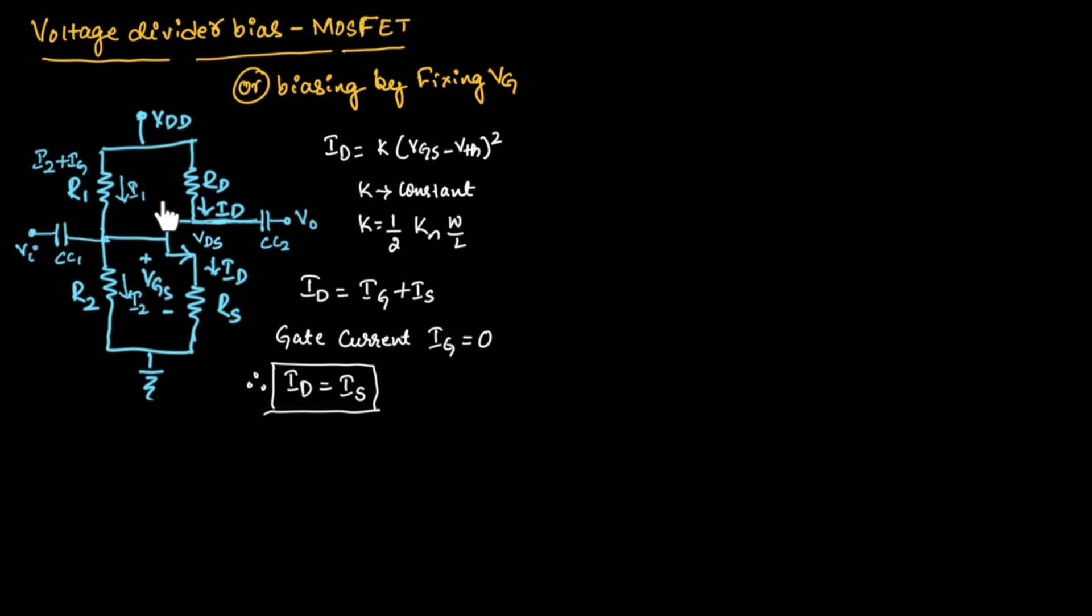Similar to voltage divider bias circuit of BJT, first we will simplify the input side of the voltage divider bias circuit of MOSFET.